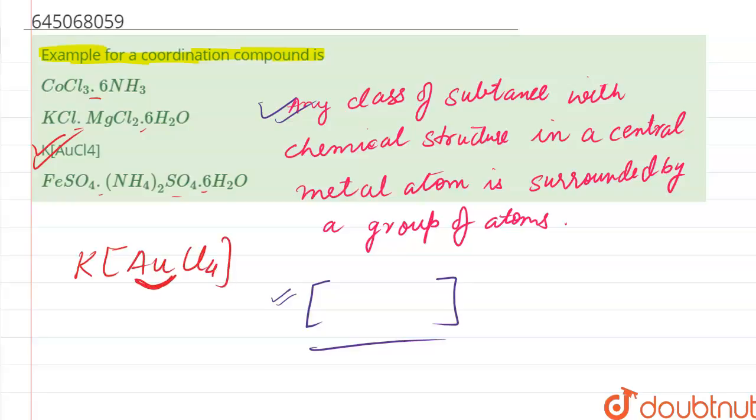have a central atom that is Au, and it is surrounded by a group of atoms. A group of atoms is Cl4, and out of the coordination sphere, that is the bracket, outside is K.